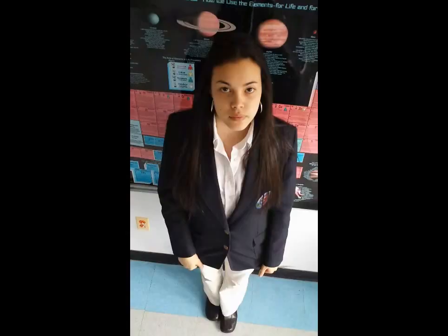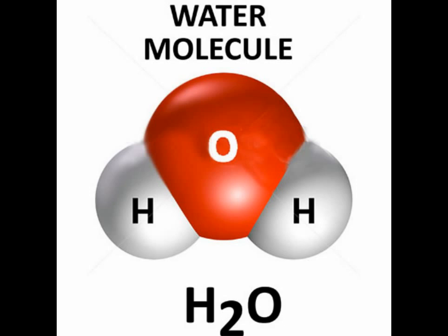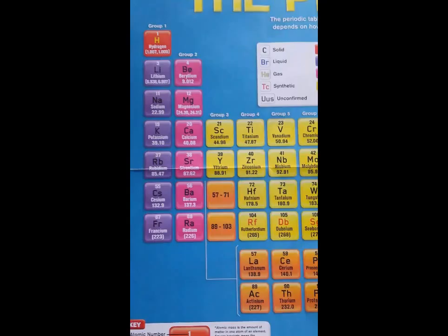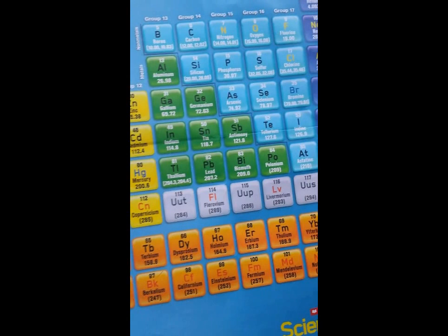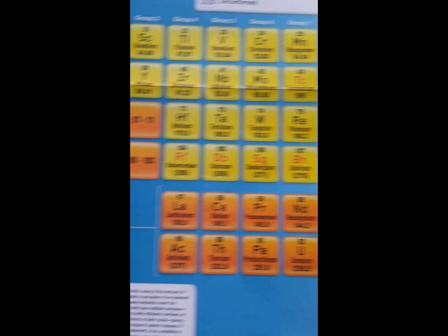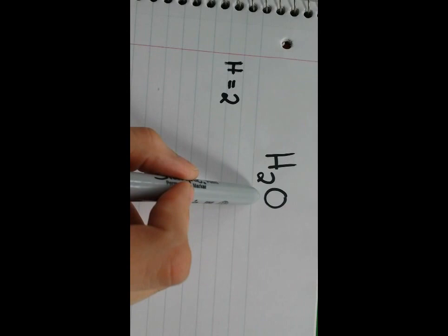What is molar mass? Molar mass is a number equal to the sum of the atomic masses of the atoms in a molecule. Let's look at H2O, also known as water. Here we have the periodic table. For this exercise, we'll be looking at hydrogen and oxygen. Now let's look at oxygen, which has an atomic mass of 16.